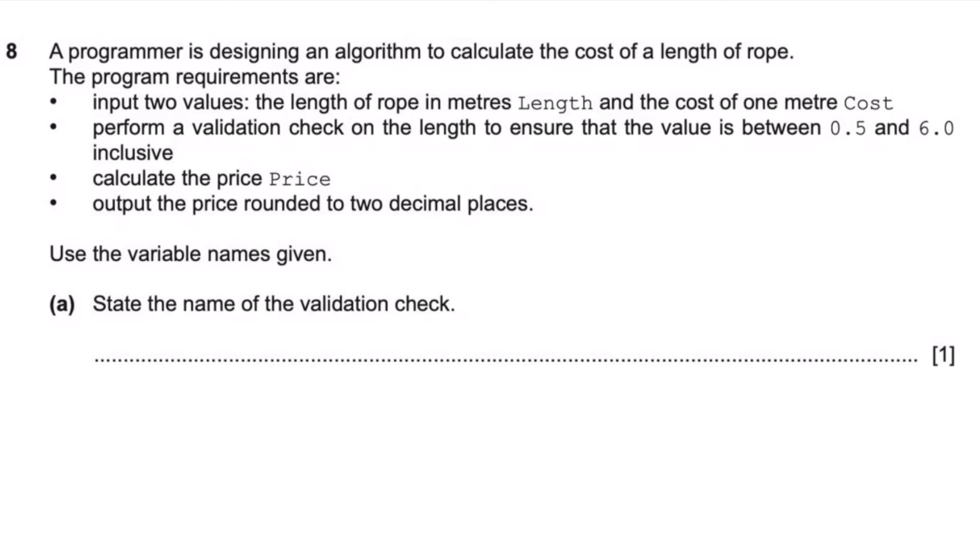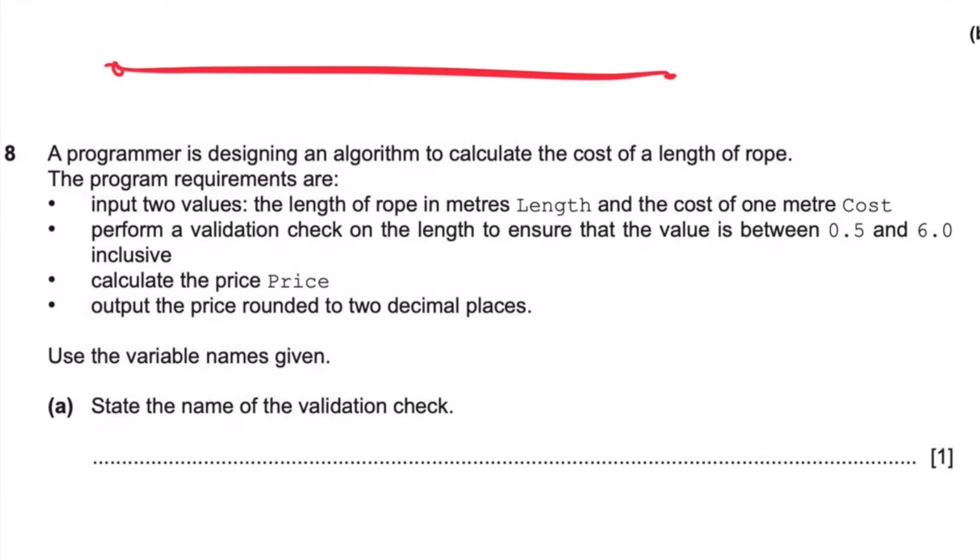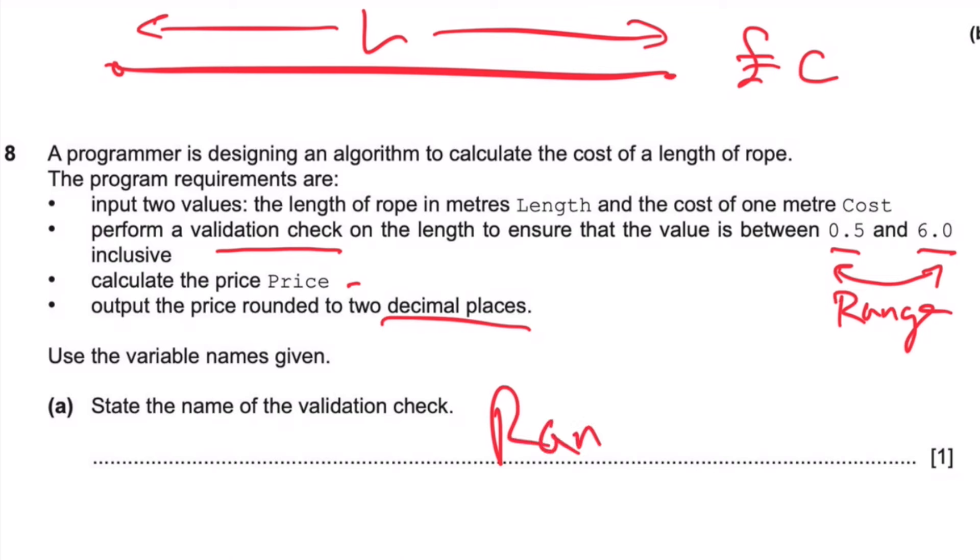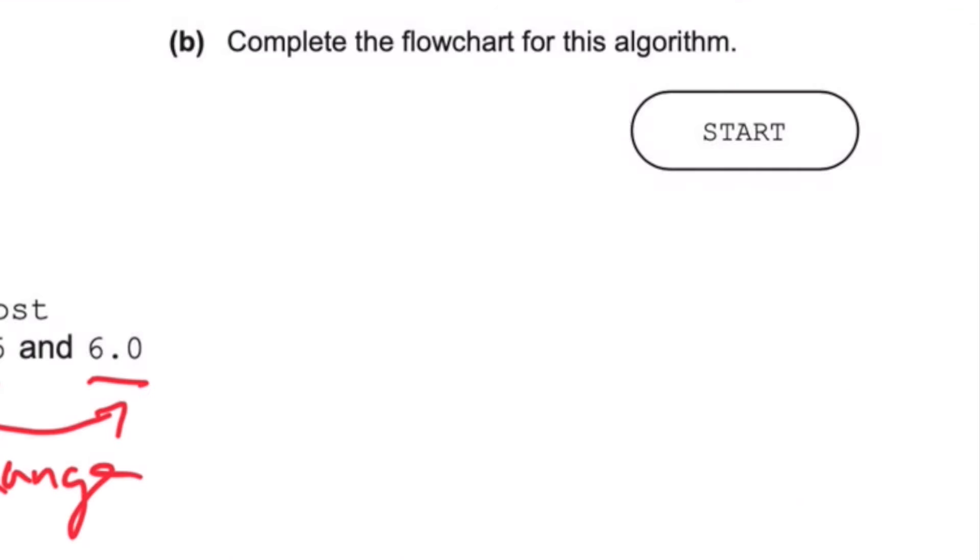Question 8: A programmer is designing an algorithm to calculate the cost of a length of rope. The program requirements are: input two values, the length of rope in meters and the cost of one meter. Perform a validation check on the length to ensure that the value is between 0.5 and 6.0 inclusive. Calculate the price. Output the price rounded to two decimal places. Use the variable names given. State the name of the validation check. Because it's between 0.5 and 6, this is what we call a range check.